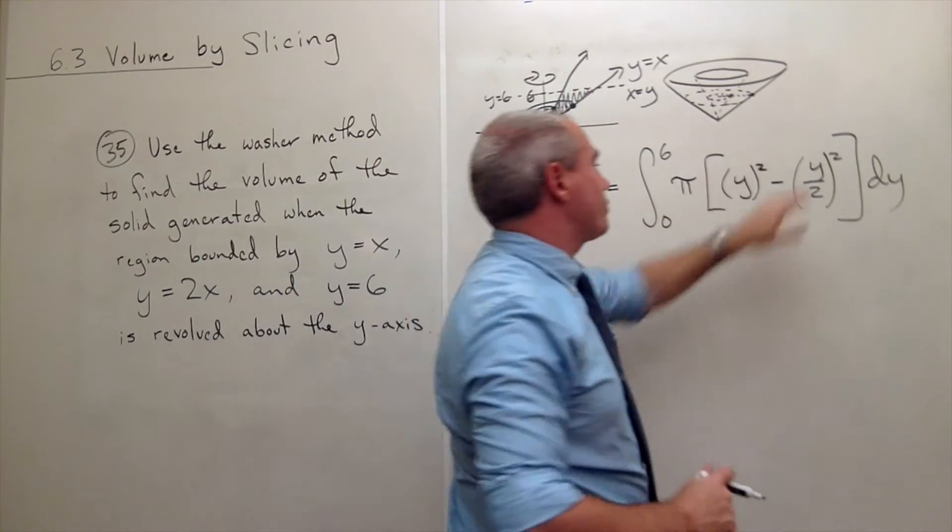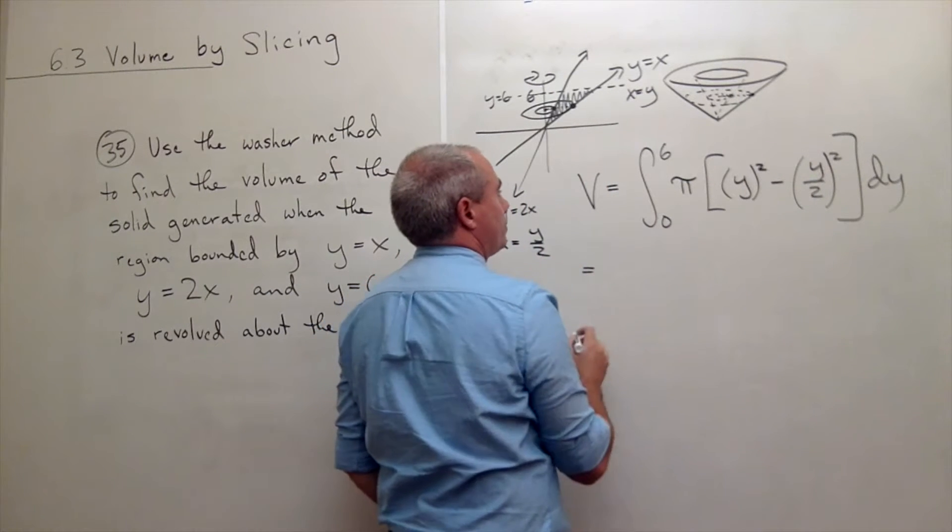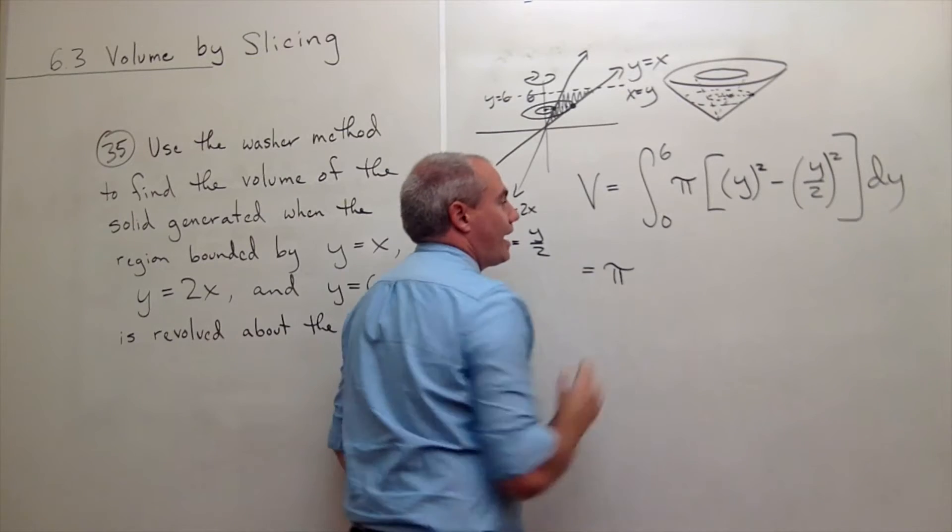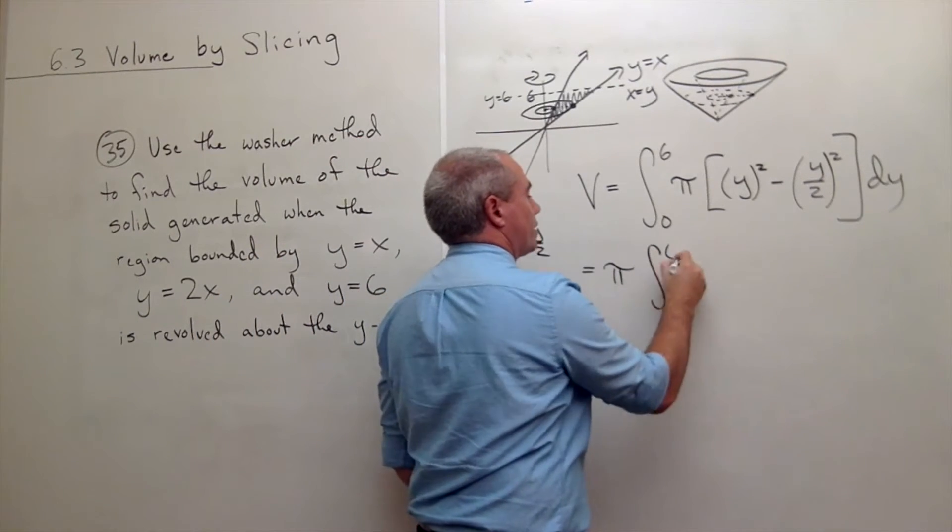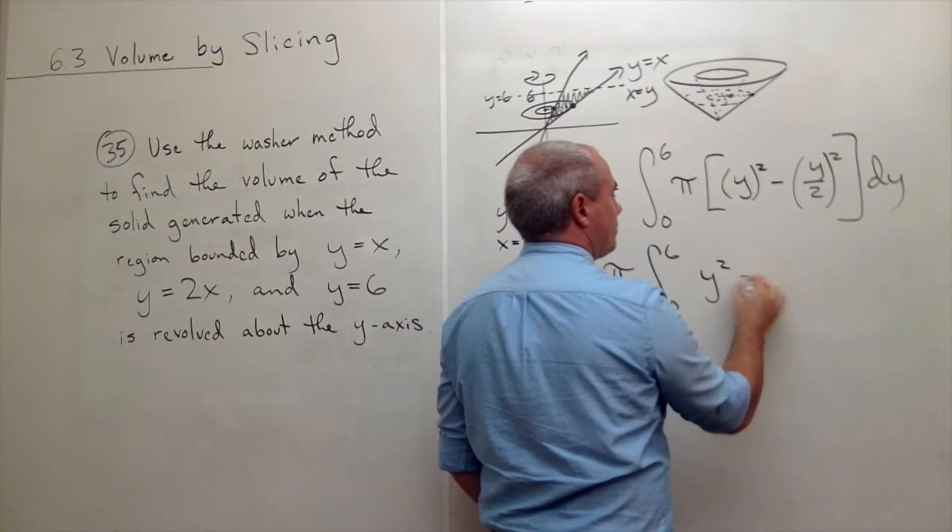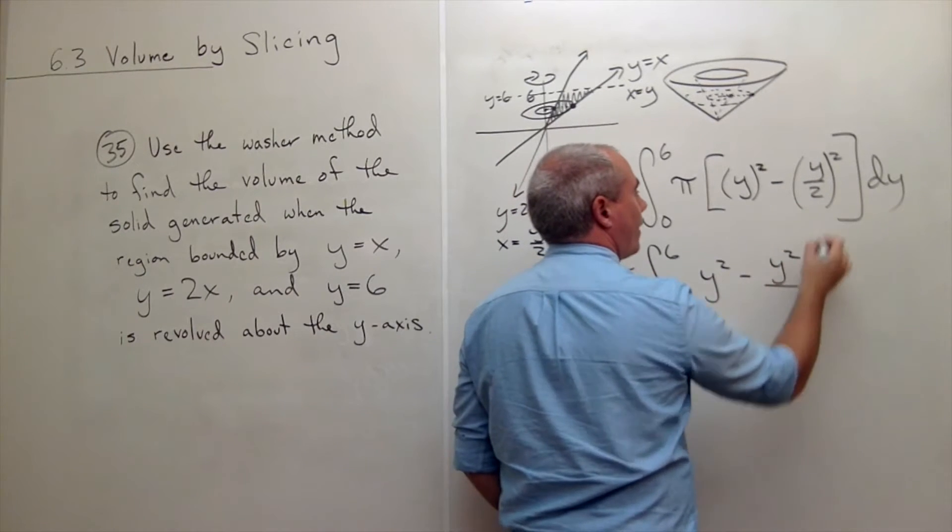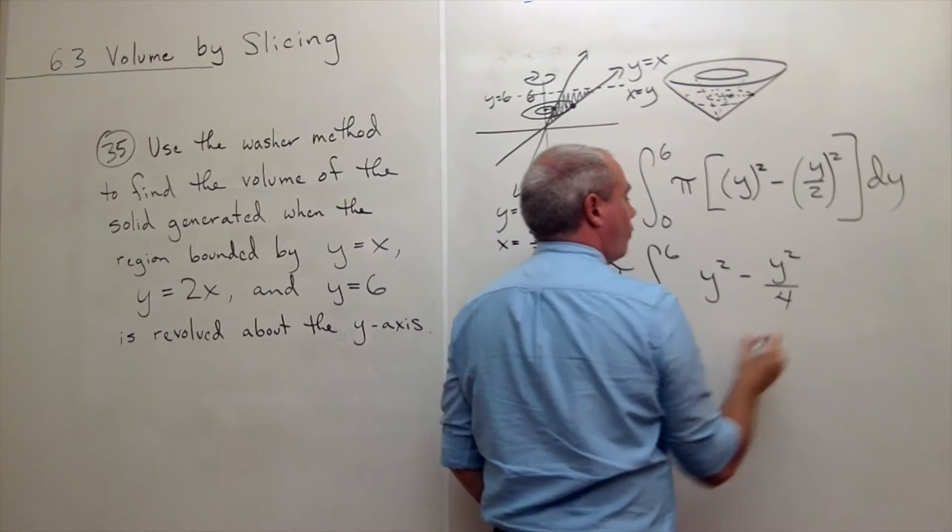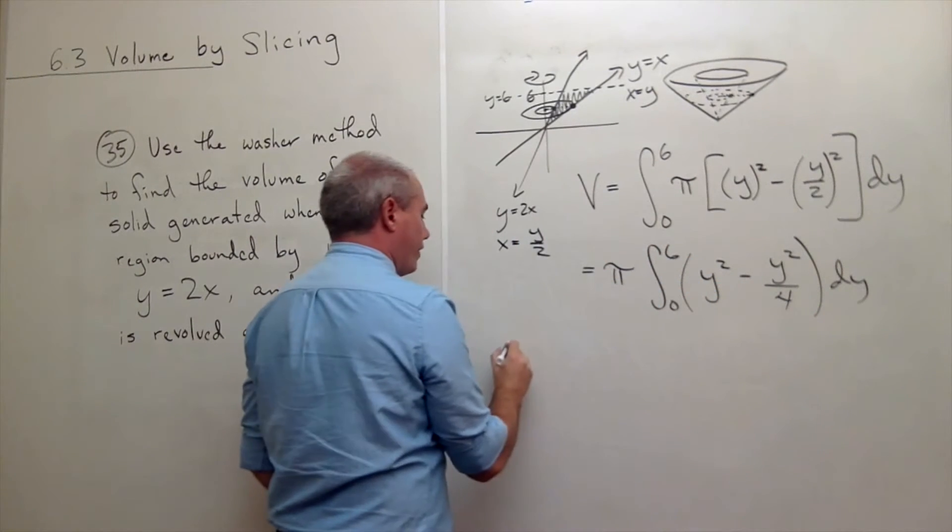So let's rewrite this a little bit. This is equal to, I could bring the pi outside of the integral. Integral from 0 to 6 of, this is y squared minus, be a little careful here, when we square this, this is y squared divided by 2 squared, which is 4 dy.